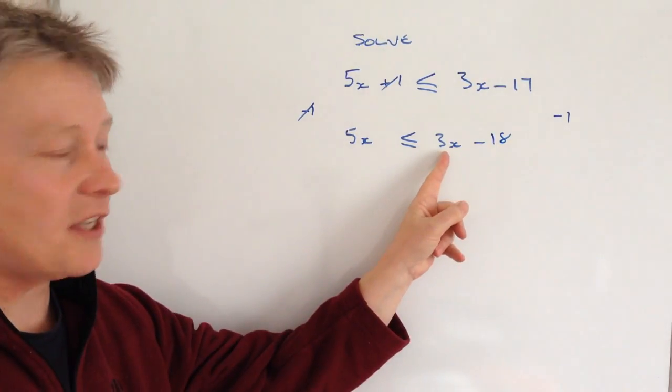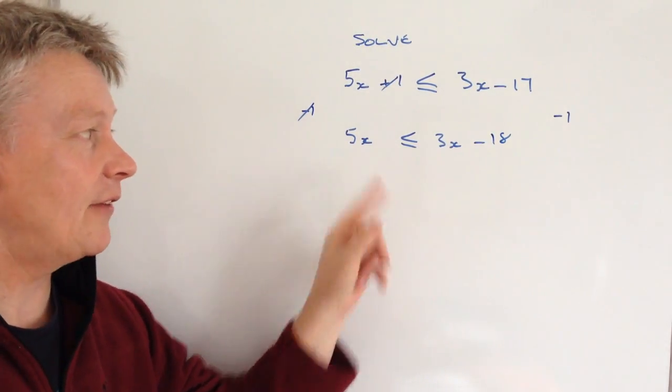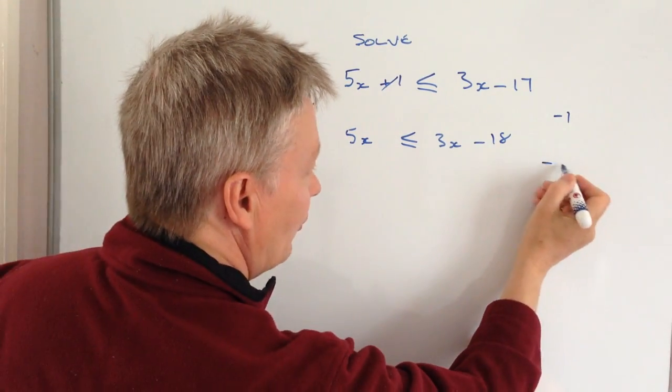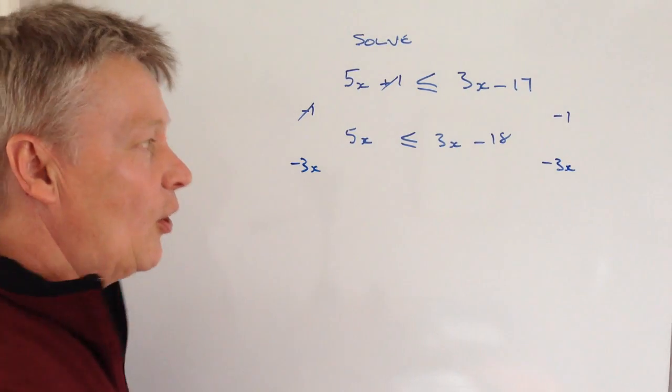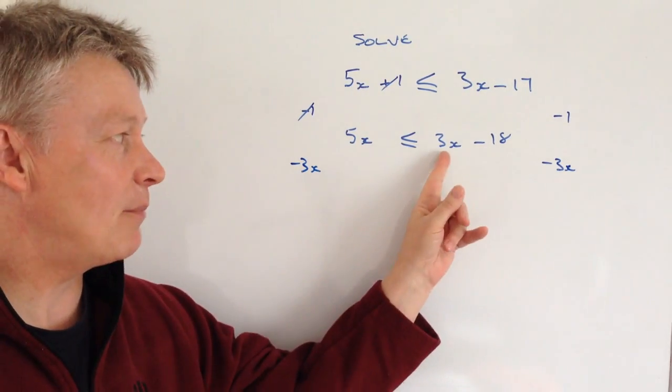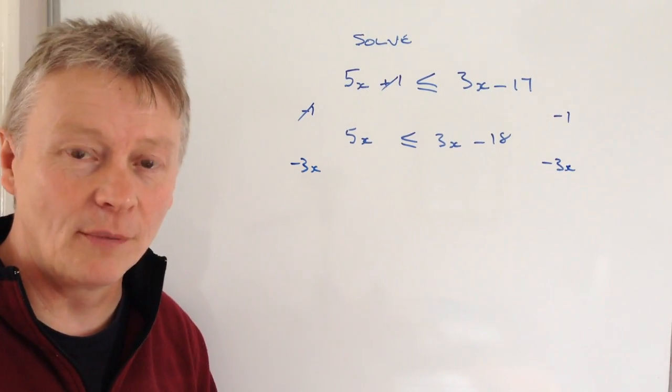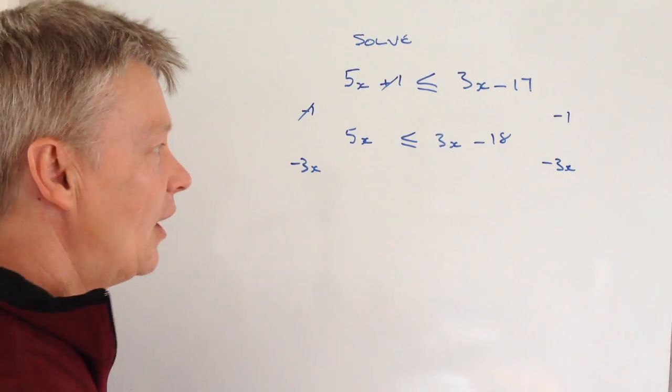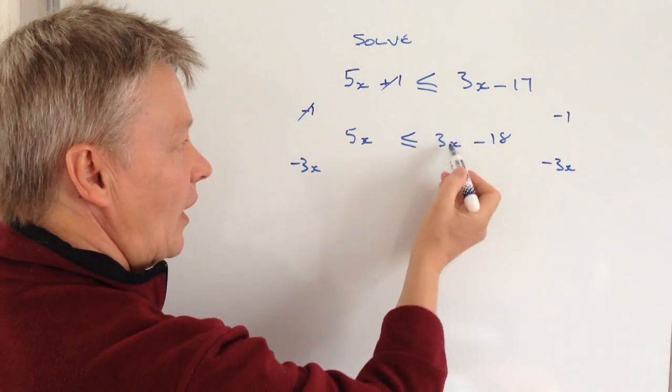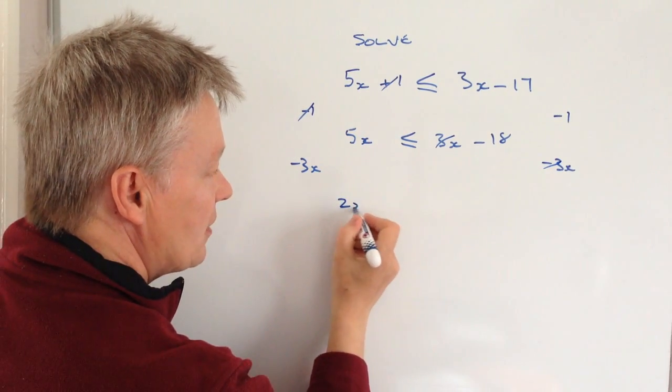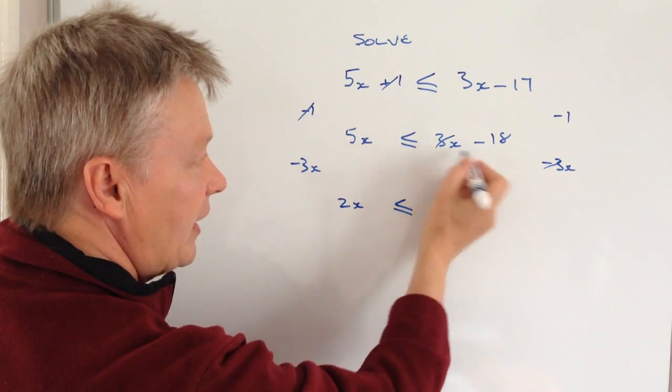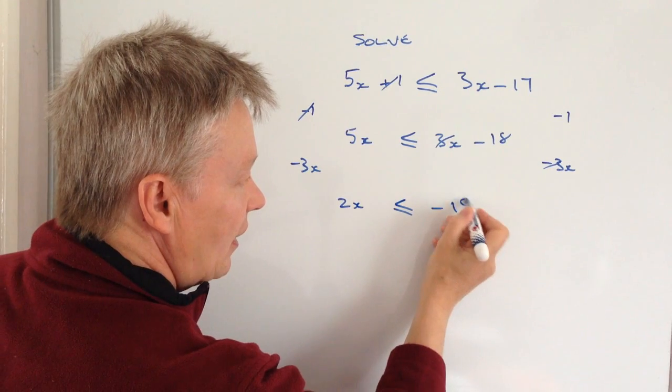Then I've got this 3x here. I need to get it over towards the left hand side, so like before I'm just going to take it away. Now remember it is one whole term. You can't separate these up, at least not at the moment. If I take these two away I get rid of that. I've got 5x minus 3x is 2x and that's less than or equal to minus 18.